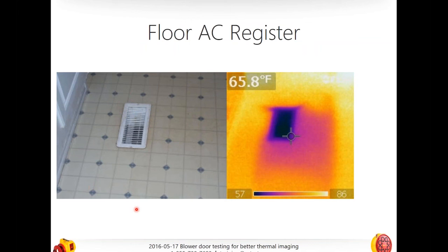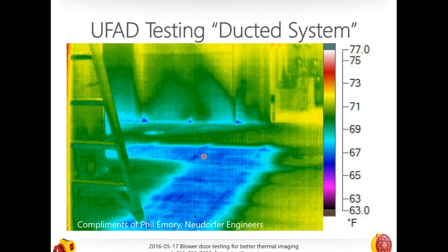Here we have a floor register over an unconditioned cellar or crawl space. The boot — the connection from the duct work — is not connected securely to the floor, and it's actually pumping warm air into the floor cavity. Here's another great image — a UFAD, or under-floor air distribution system in a commercial building, compliments of our friend Phil. We used a blower door on the duct system to pressurize it, then used an infrared camera to see how leaky it is.